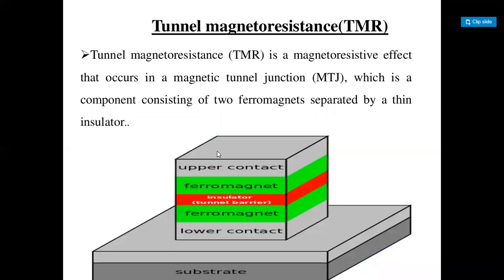Another application is called Tunnel Magnetoresistance (TMR), which is a magnetoresistive effect that occurs in a magnetic tunnel junction — a component consisting of two ferromagnets separated by a thin insulator. The diagram shows a substrate at the bottom, with a dielectric or magnetoresistance slab in between, a magnetic tunnel junction kept at the upper contact ferromagnet, a tunnel barrier (insulator) in between, another ferromagnet below, and a lower contact at the bottom.